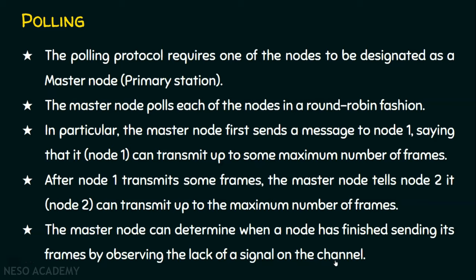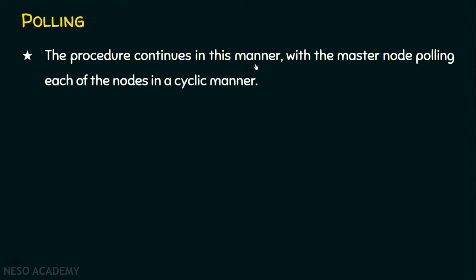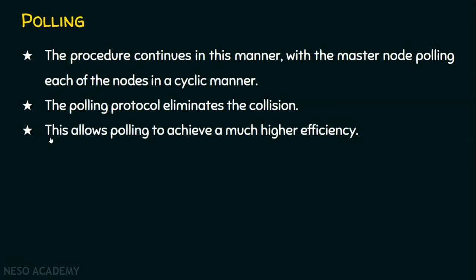If there is no signal on the channel, the master node can determine that the node has finished sending the data. This procedure will continue till all nodes have transmitted their data, with the master node polling each of the nodes in a cyclic manner. The master node will be giving chance to every other node to send their data. Thus, polling ensures there is no collision. This polling protocol eliminates collision by using this approach, and this allows polling to achieve a much higher efficiency. The advantages are: it eliminates collision and we can achieve higher efficiency.